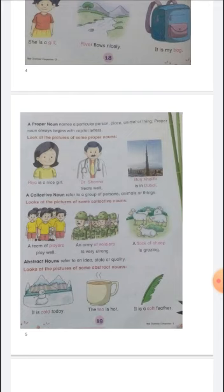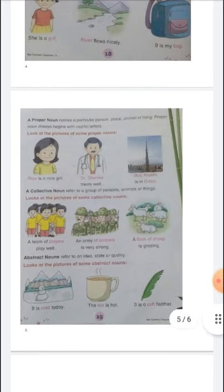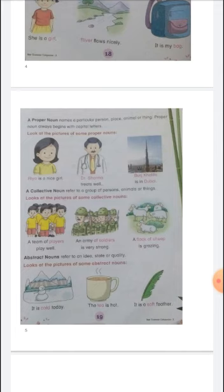In the next sentence: Dr. Sharma treats well. Here we indicate especially a named person, Dr. Sharma. In the third example: Burj Khalifa is in Dubai. We indicate that particular place, Burj Khalifa, which is in Dubai.